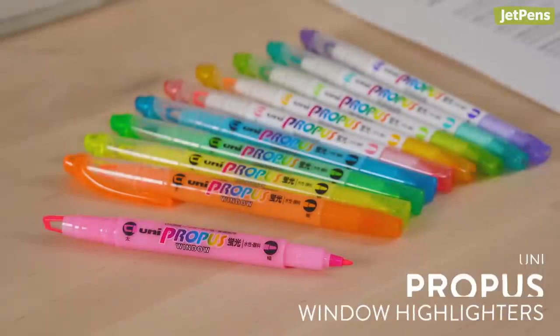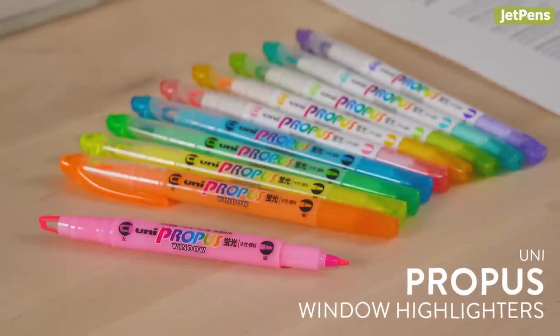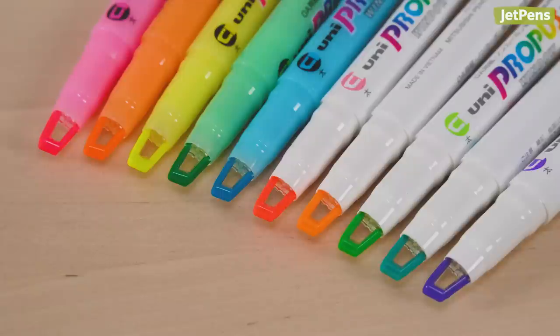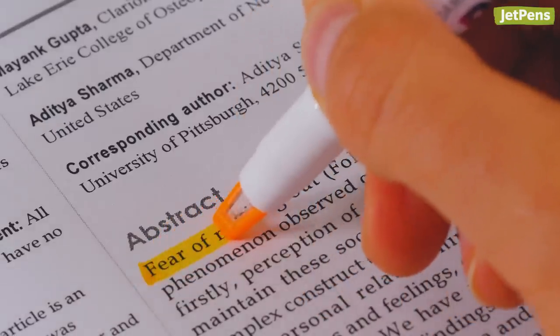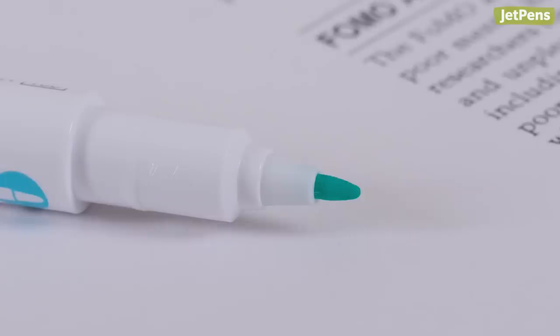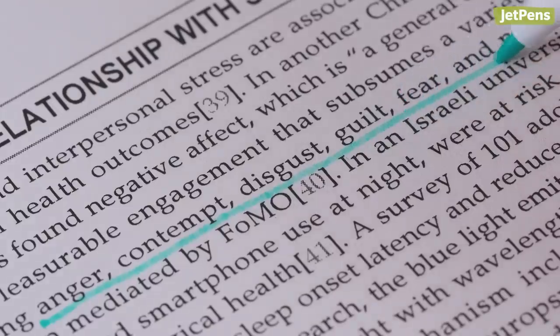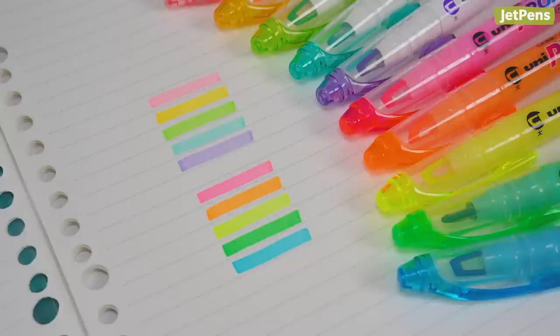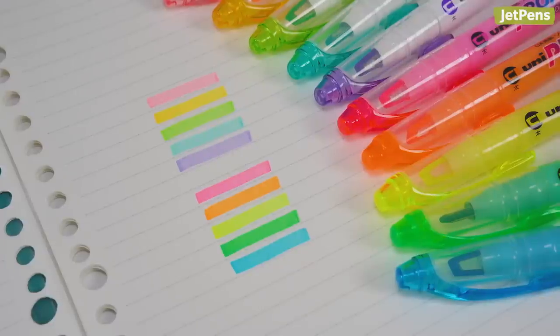Never worry about over-highlighting again with the Uni Propus Window. The markers feature windows in the tips, allowing you to see exactly where you're highlighting. The other end of the markers offers a fine tip for writing notes, underlining, and circling. Pick from soft pastel or fluorescent colors.